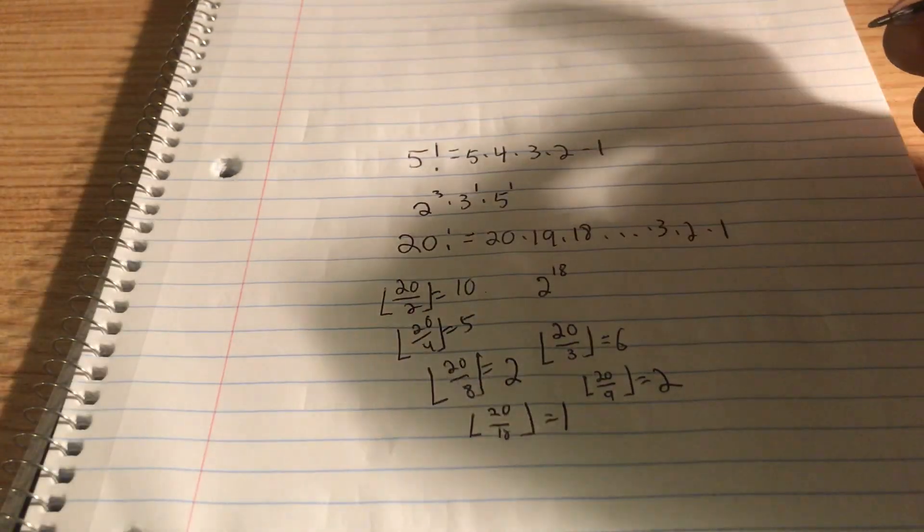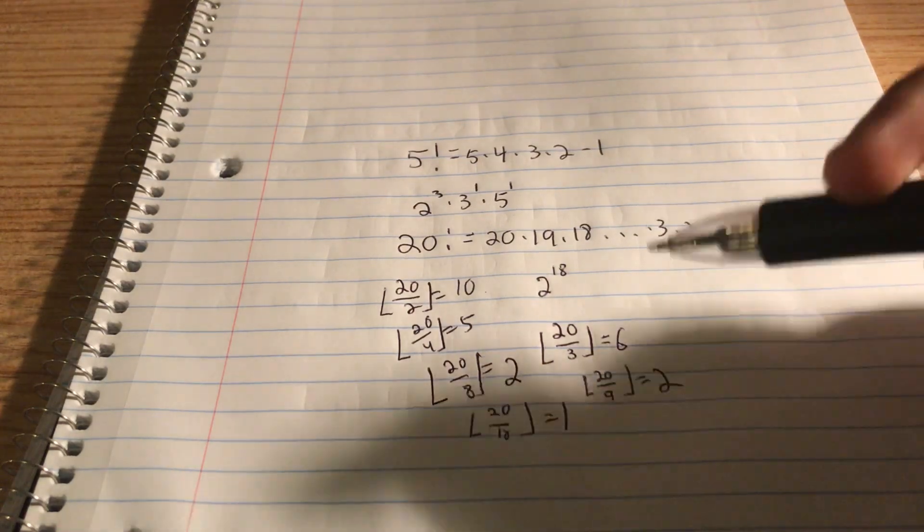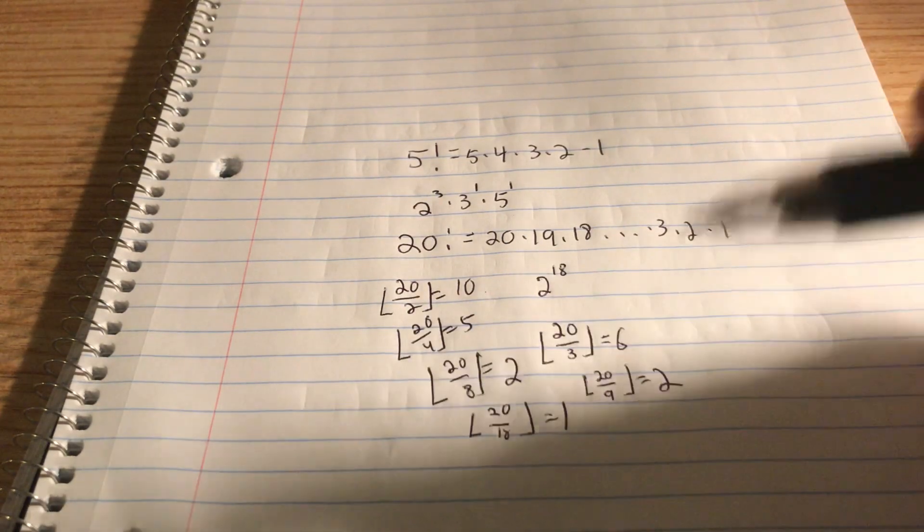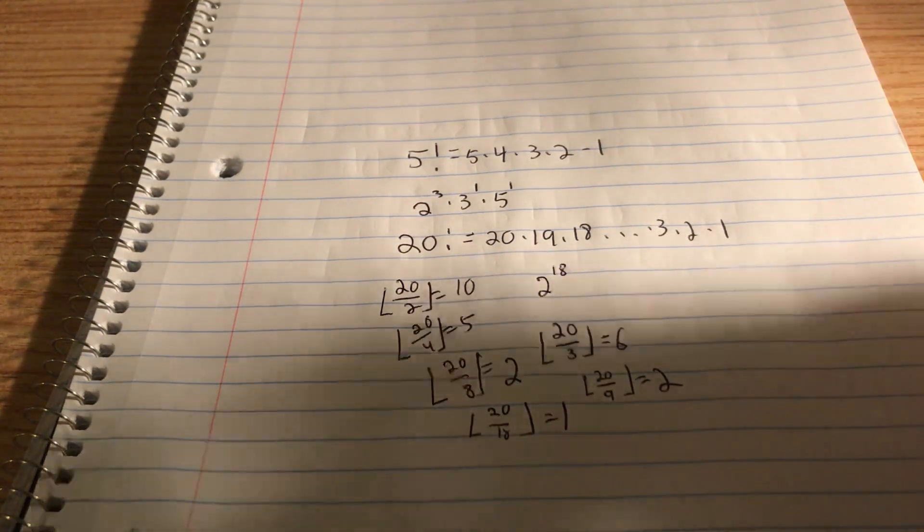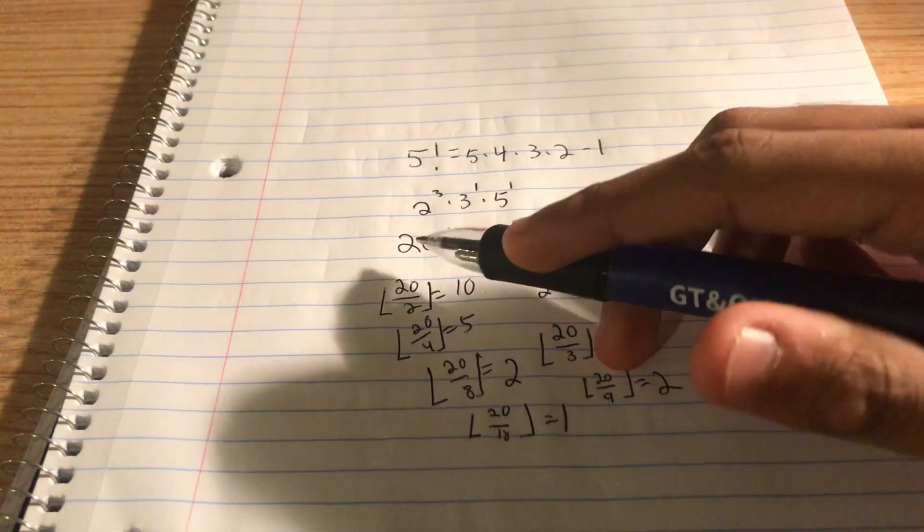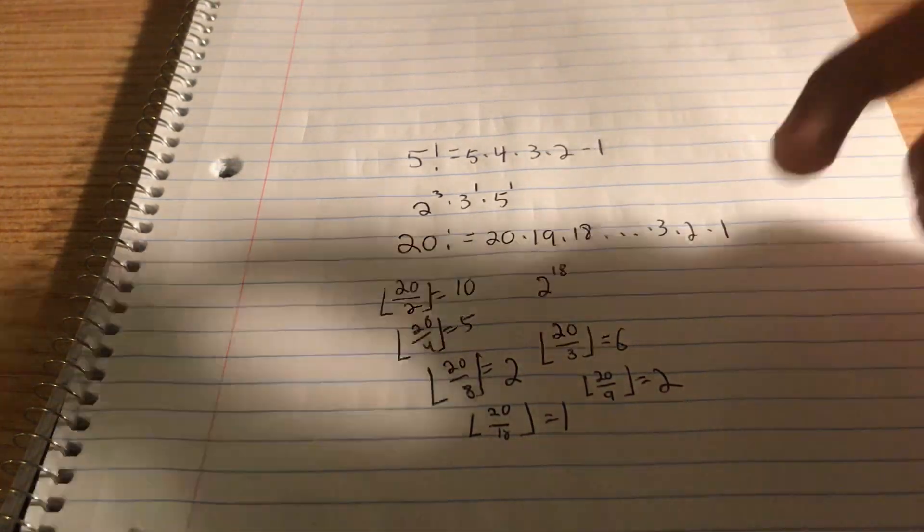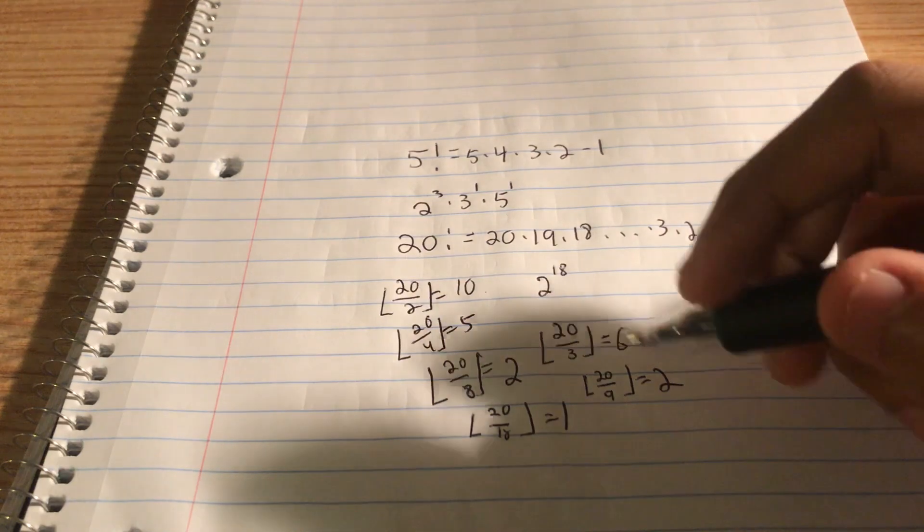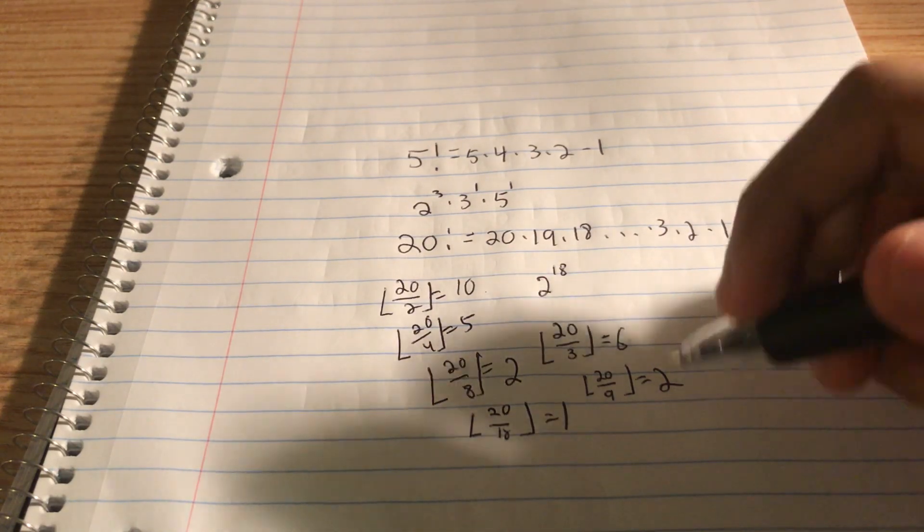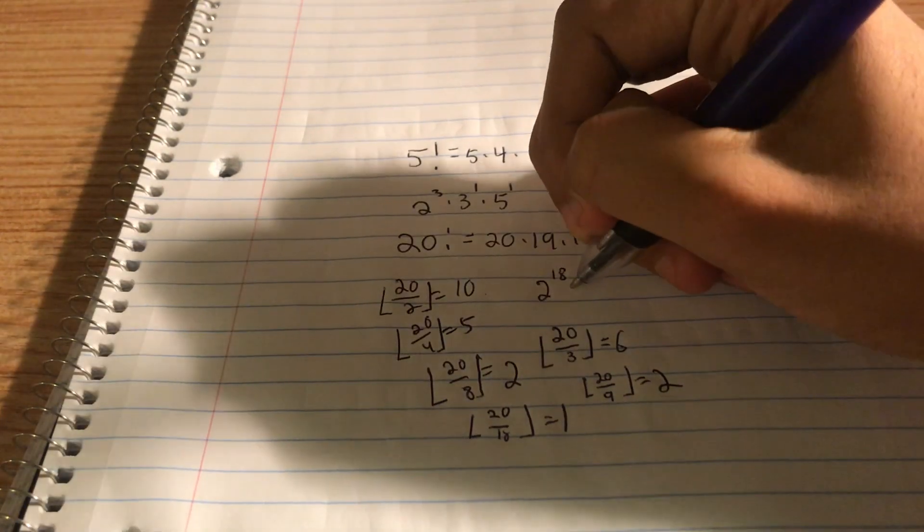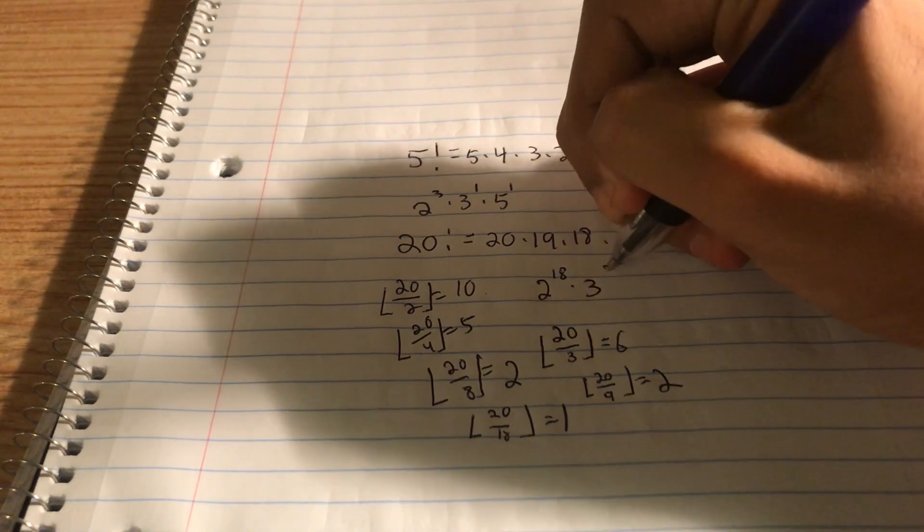Now, is there anything else? Well, 3 squared is 9. What's 3 cubed? That's 27. And 27 is bigger than 20. So we don't need to check any more powers of 3. We already have this many. 6 plus 2, that's 8. So it's 2 to the 18 times 3 to the 8th.